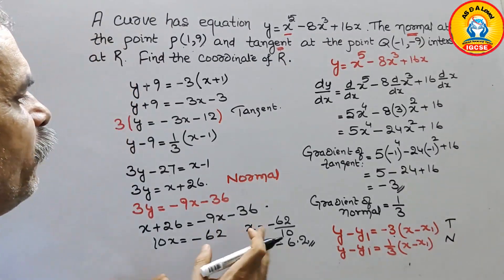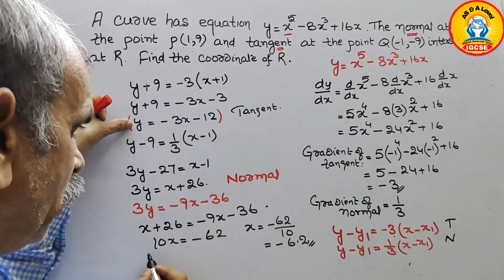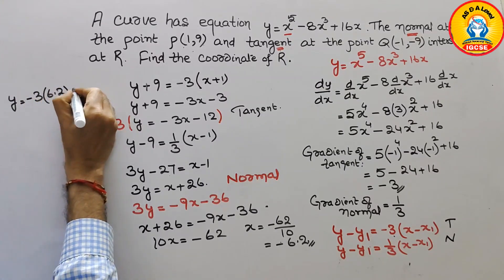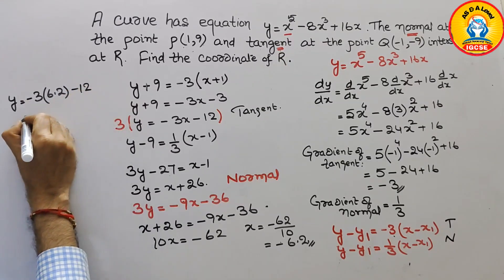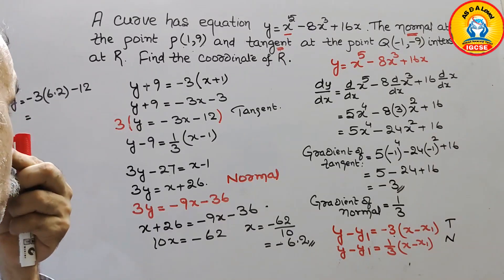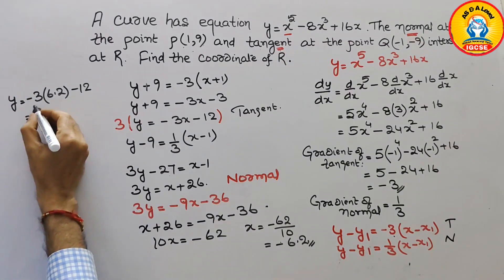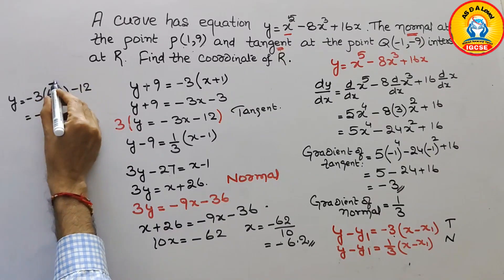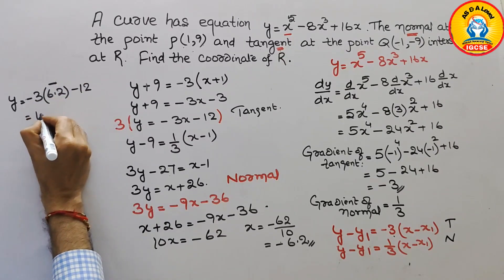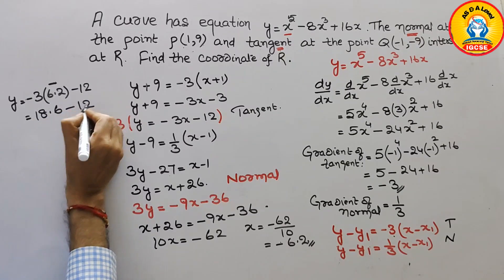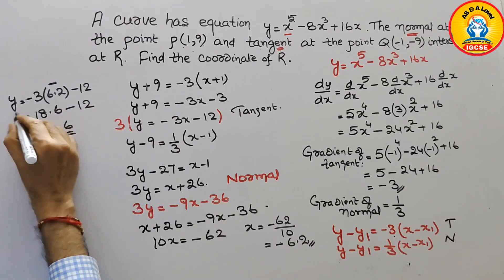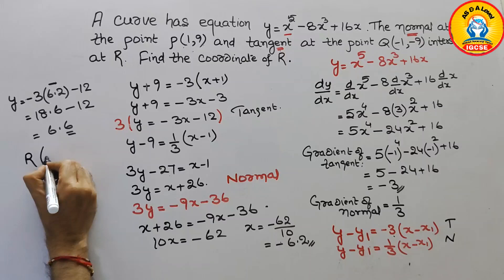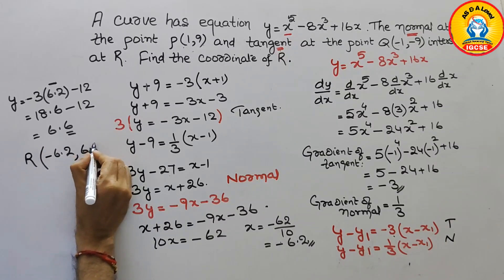Next we find y by substituting x = -6.2 into the tangent equation: y = -3(-6.2) - 12. Minus times minus is plus, so y = 18.6 - 12 = 6.6. Therefore, the coordinates of R are (-6.2, 6.6).